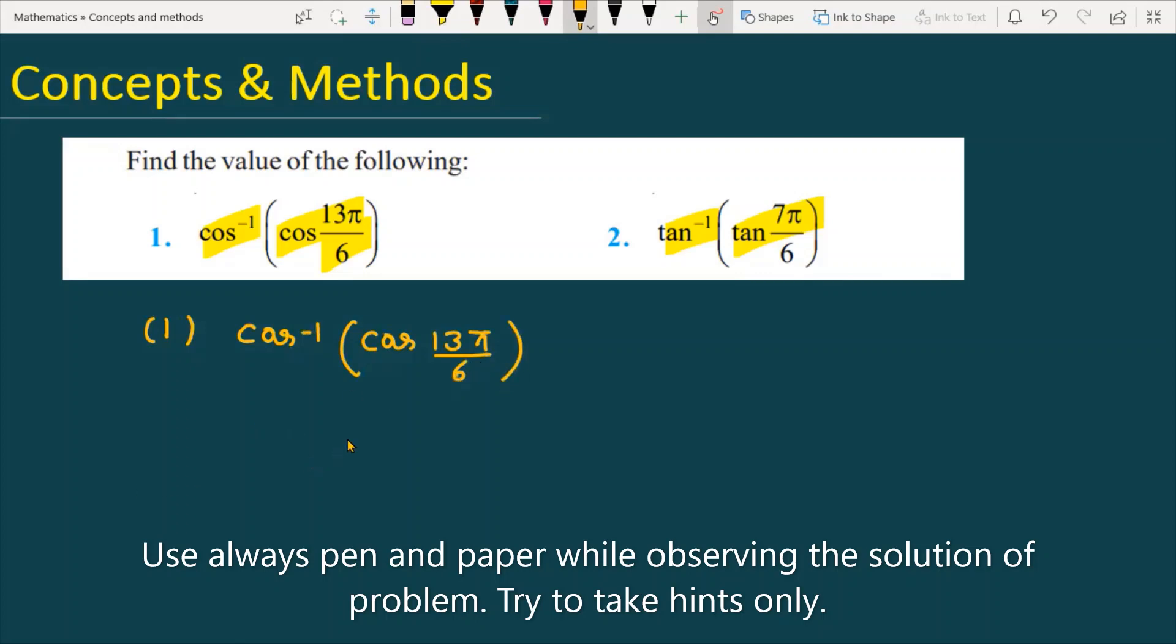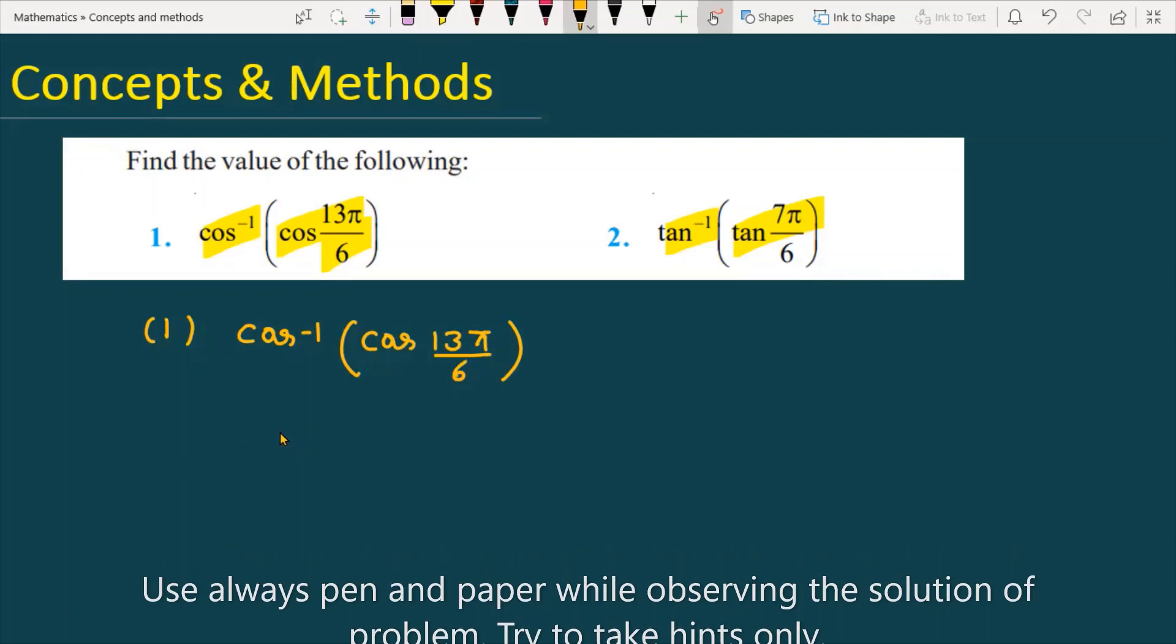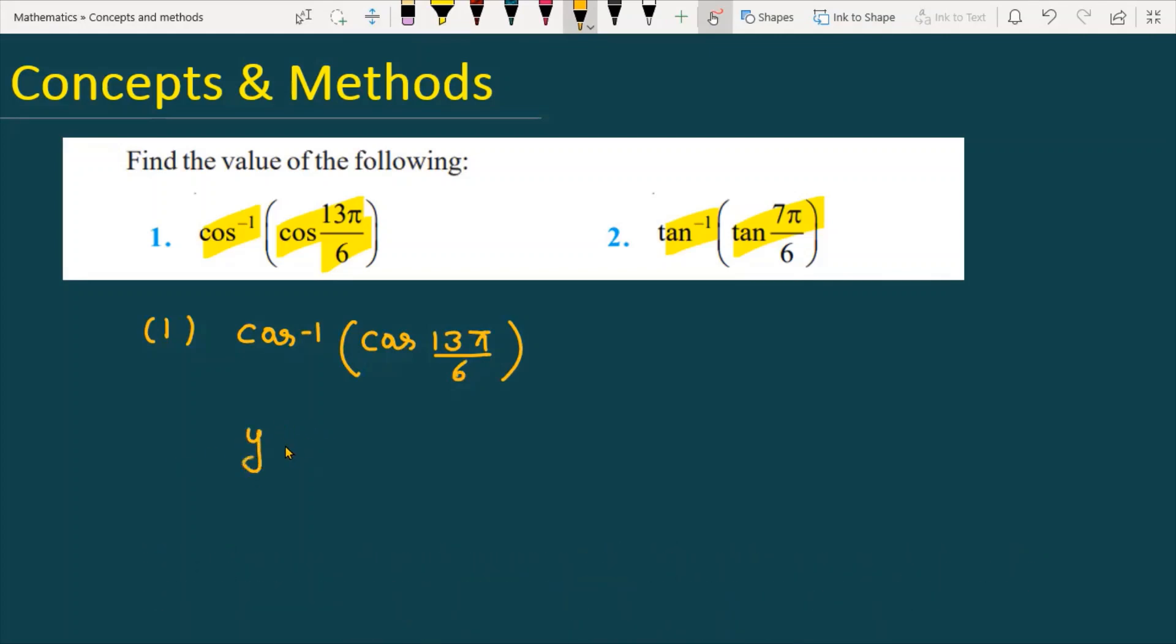The concept is: if you have a function y equals cos inverse cos x, it is always equal to x, but the restriction is x is greater than or equal to 0 and less than or equal to π.